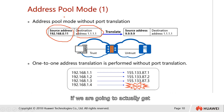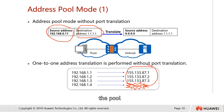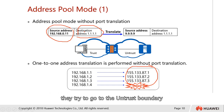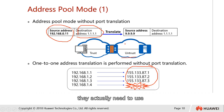In address pool mode, we are going to get addresses from the pool. Assuming these are the addresses from the pool, basically for every user when they try to go to the untrust network, they are going to be translated. When they actually translate, they need to use the addresses from the pool.